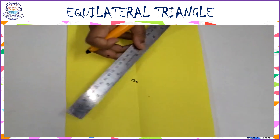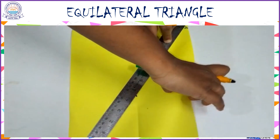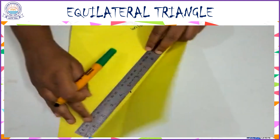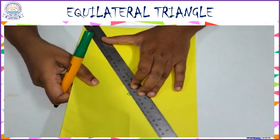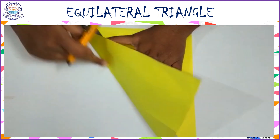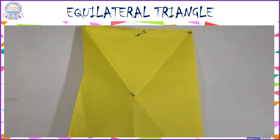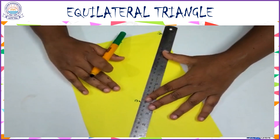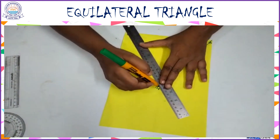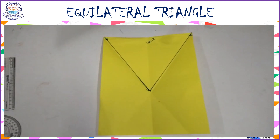Now fold the paper from A to C, and in the same way fold the paper from B to C. So a triangle ABC is formed. Now let's join the points A-C and B-C. A triangle is formed by folding the paper.